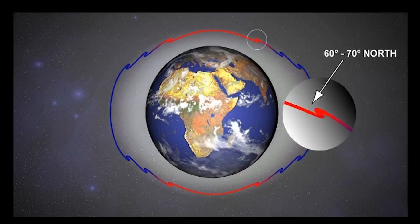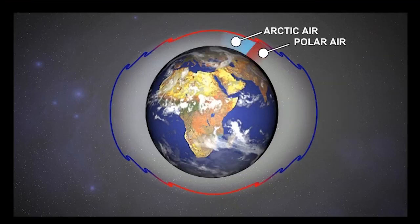The last of the tropopause breaks occurs at even higher latitudes, and is evident mainly in the northern hemisphere and in winter. This is where very cold Arctic air meets less cold polar air. It occurs typically at about 60 to 70 degrees latitude. The temperature difference here is also enough to cause another tropopause fold or break.